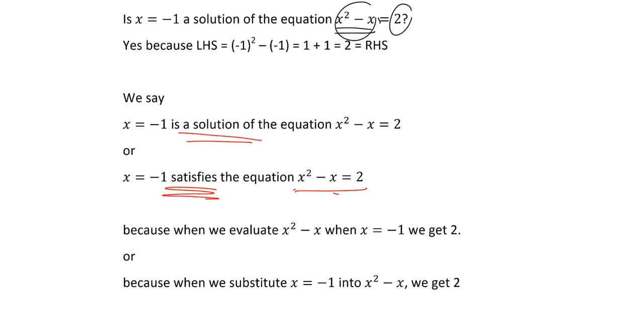And sometimes people talk about it like this because when we evaluate this thing x squared minus x when x equal to minus 1 we get 2. This is just a fancy way of saying when we find out the value of x squared minus x when x is minus 1 we'll get 2. In other words we put x is minus 1 into this thing here we get out 2.